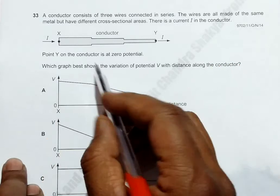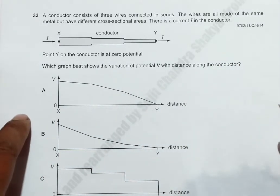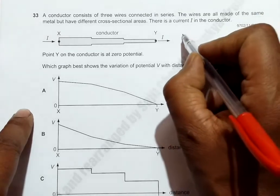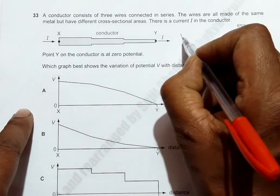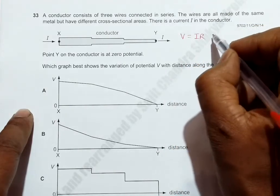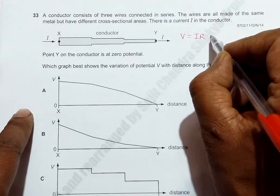We have to identify which graph best shows the variation of V with distance along the conductor. The relation that we have to take care of here is V equals IR.